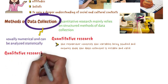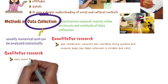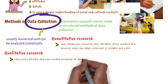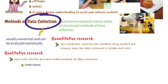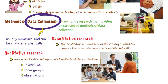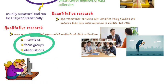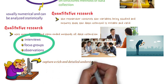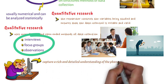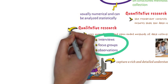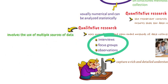Qualitative research, on the other hand, uses more flexible and open-ended methods of data collection such as interviews, focus groups, and observations. These methods allow the researcher to capture a rich and detailed understanding of the phenomenon under study. Qualitative research often involves the use of multiple sources of data, including direct observation, interviews, and artifacts.